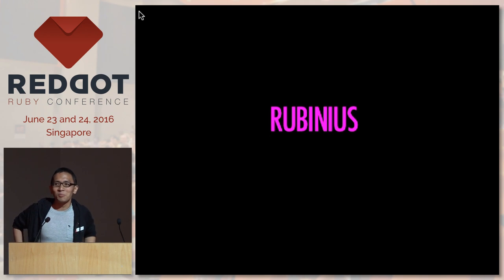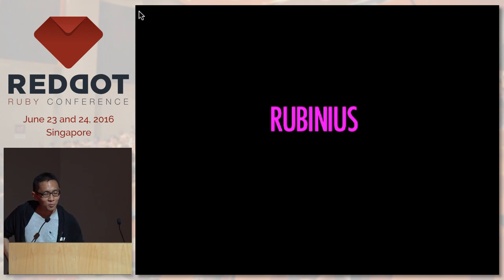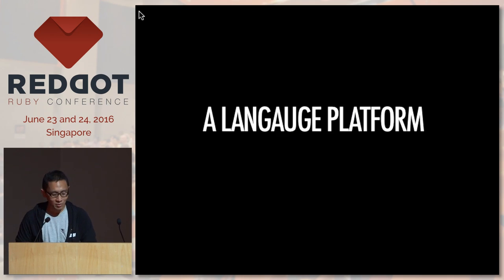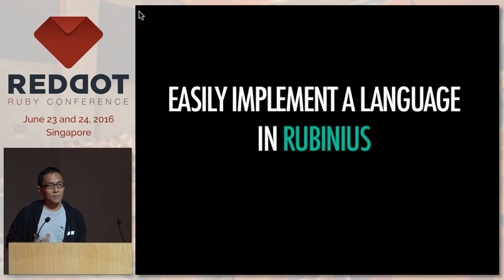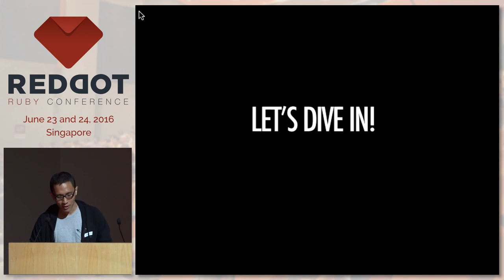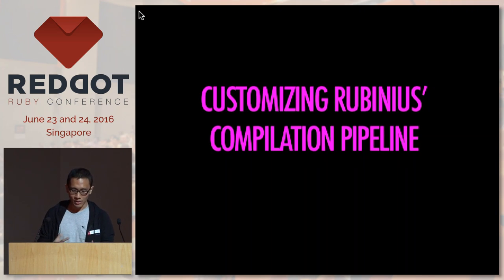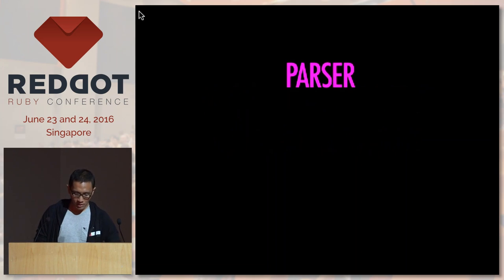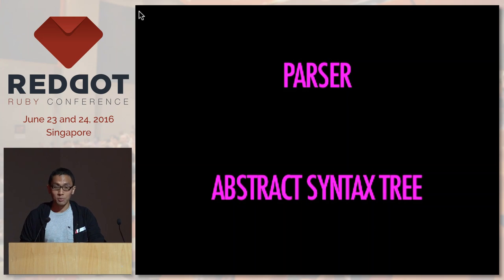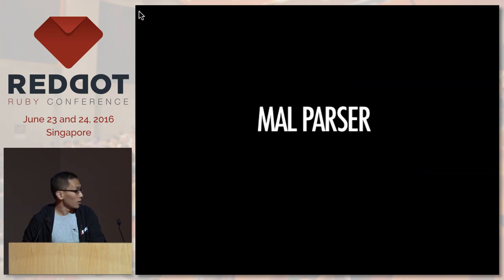I'm not actually going to use MRI — I'm going to use Rubinius. Why? Rubinius is not just another implementation of Ruby, it's also a language platform. It lets you easily implement a language in it, and lets you customize the parser and the abstract syntax tree. So what we're going to do is customize Rubinius's compilation pipeline: first the parser, second the abstract syntax tree.